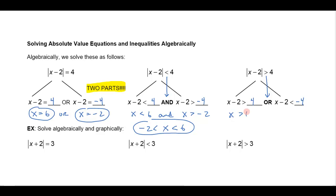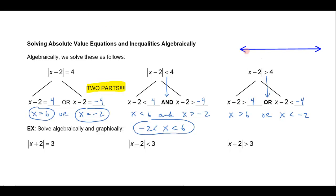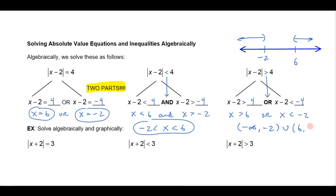Solving the greater-than version gives x is greater than 6 or x is less than negative 2. On the number line, negative 2 is to the left of 6. If I had 'and' between them instead of 'or,' I'd be looking for the intersection of those two sets, and they don't intersect — so the word 'or' is very important. Likewise, 'or' between x less than 6 and x greater than negative 2 would cover the whole real line. This solution is the interval from negative infinity to negative 2, union from 6 to infinity.